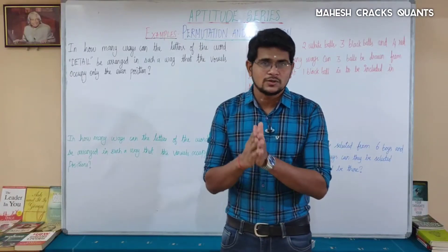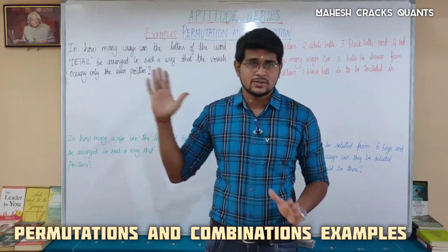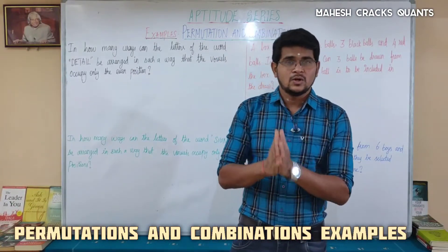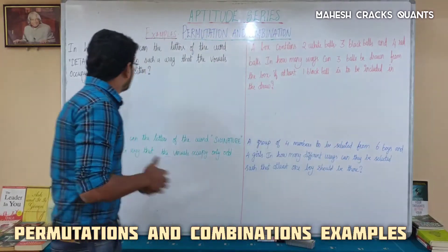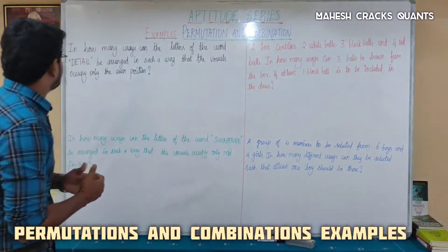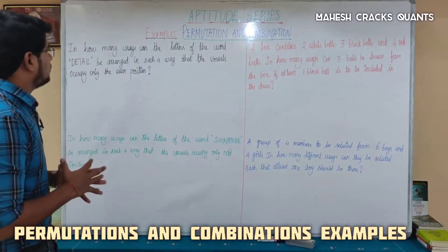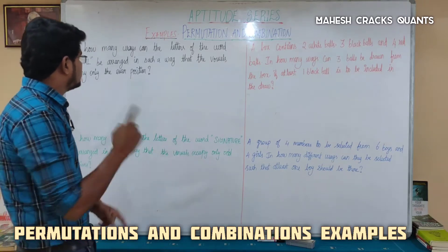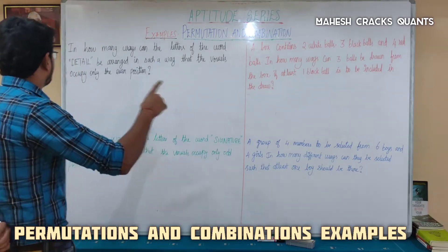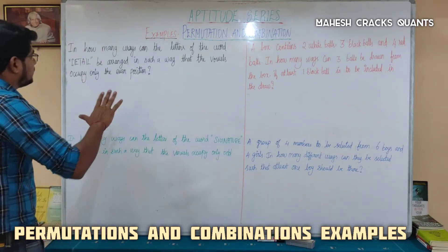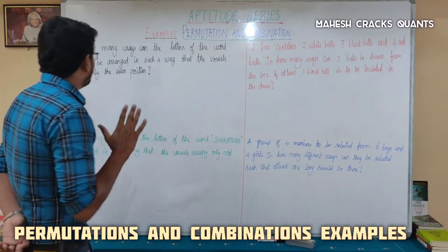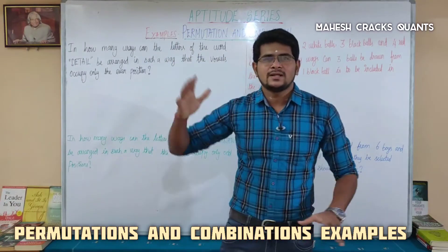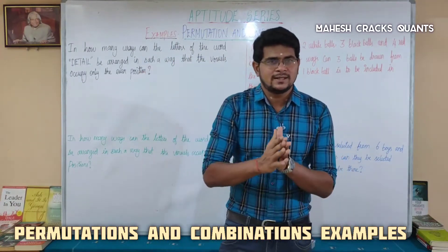This is Mayesh. In this session we are going to see examples of permutation and combination. The first question is: in how many ways can the letters of the word DETAIL be arranged in such a way that the vowels occupy only the even positions?